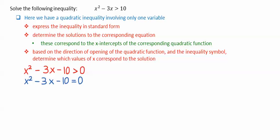This quadratic expression on the left side of this equation can be factored. We're looking for numbers that multiply to give negative 10 and add to give negative 3. These numbers are 2 and negative 5. We then have the factors, x plus 2 times x minus 5 equals zero.